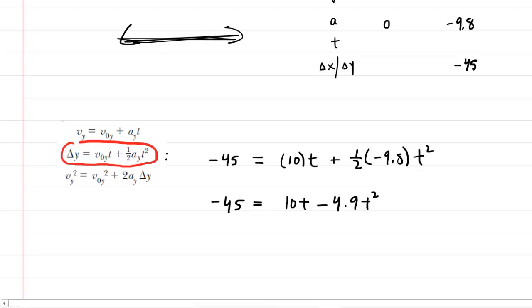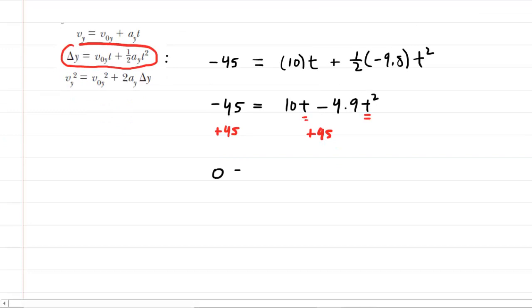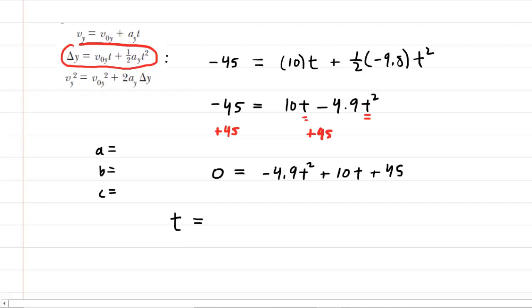This is a quadratic equation because it contains both t and t squared. We need everything equal to zero, so add 45 to both sides. Reorganizing in standard form: 0 equals negative 4.9t squared plus 10t plus 45. To solve for t, we use the quadratic formula. The a value is negative 4.9 (coefficient of t squared), b is positive 10, and c is the constant 45.